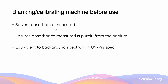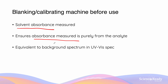Before we use our colorimeter, we are going to blank the machine by filling up the cuvette with the solvent used. This solvent absorbance is then measured. The reason why we blank the machine is to ensure that the absorbance measured is only from the analyte — meaning that if we have any impurities in the solvent, we'll be able to remove their absorbance from the absorbance of the final solution. Blanking a colorimeter is equivalent to doing a background spectrum in the UV-Vis spectrometer.